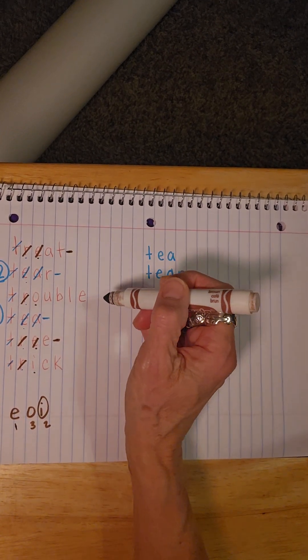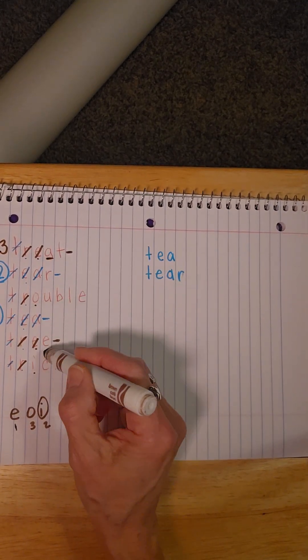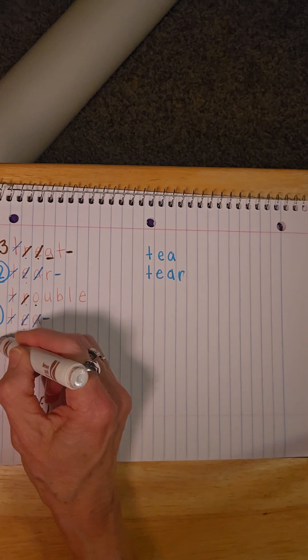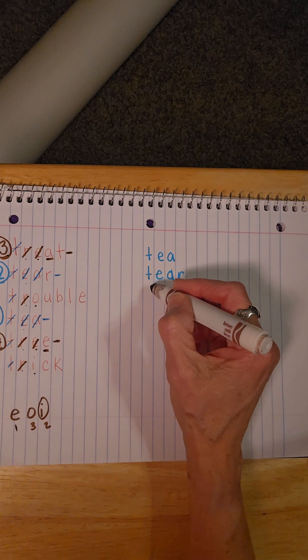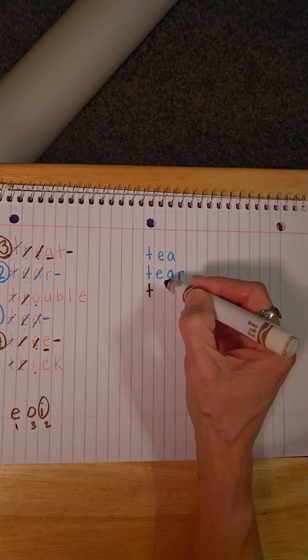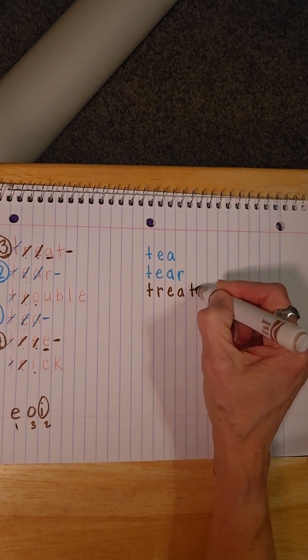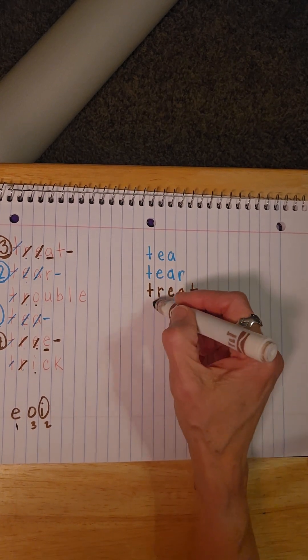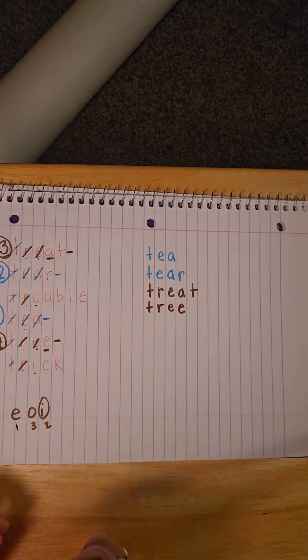Well, guess what? That means that this one is going to come first. So that is going to be my number three. Because I have an A here, and an E here. This becomes my number four. So I'm going to go ahead, and I now have my number three was T, R, E, A, T. And then I had T, R, E, E.